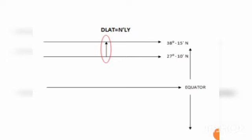So the place of origin is 27 degrees 10 minutes north and the place of arrival is 38 degrees 15 minutes north. Therefore the direction of the difference of latitude is northerly, giving an answer of 11 degrees 05 minutes north.